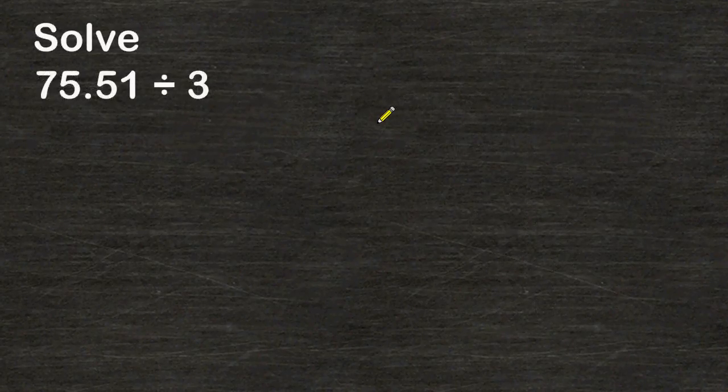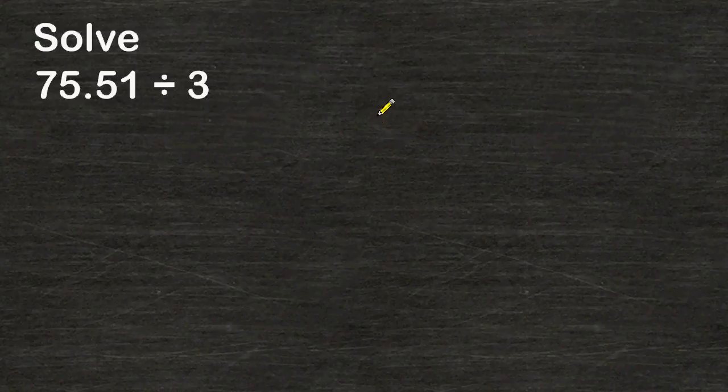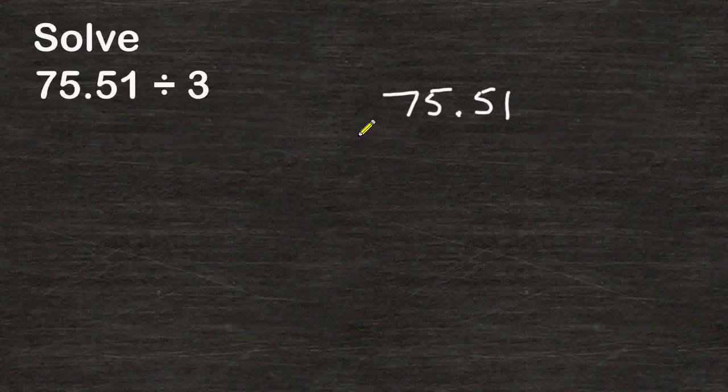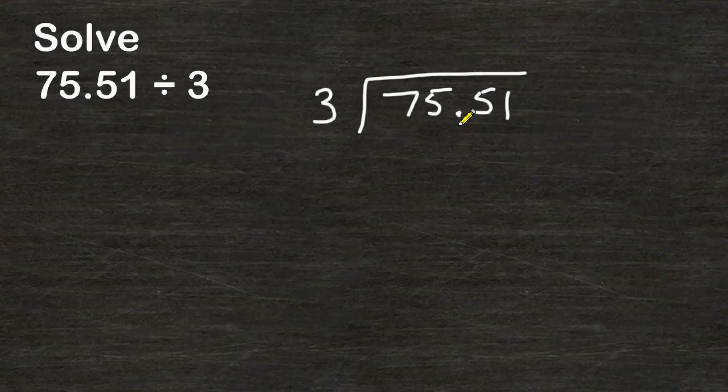In this example we are going to review what to do when your dividend has a decimal but your divisor does not have a decimal. So let's set up the problem 75 and 51 hundredths divided by 3 wholes. When there is a decimal only in the dividend simply take that decimal and write it directly above.